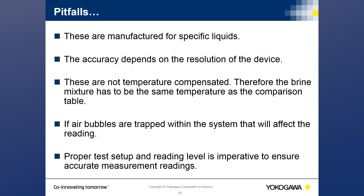A solometer with higher resolution has a smaller usable range. For example, a meter covering 0–27% range is not as accurate near the saturation point as one covering 23–27%. A smaller range gives larger accuracy. These are not temperature compensated, so the brine sample must be at the same temperature the comparison table and device are calibrated to. Air bubbles trapped in the system will also affect readings, and proper level setup is imperative for accurate measurement.